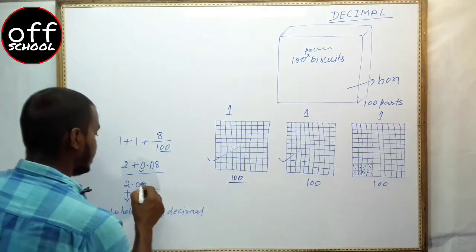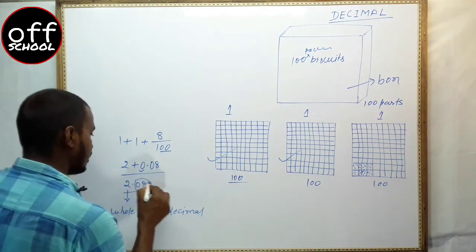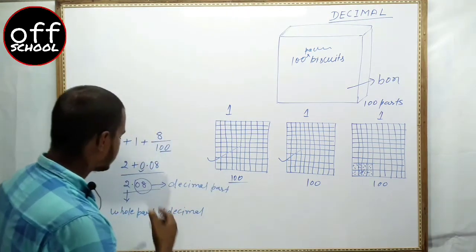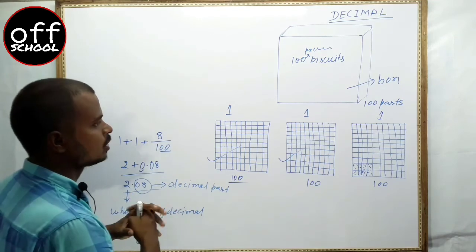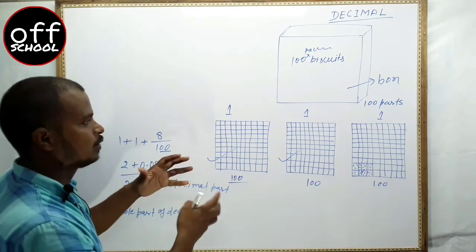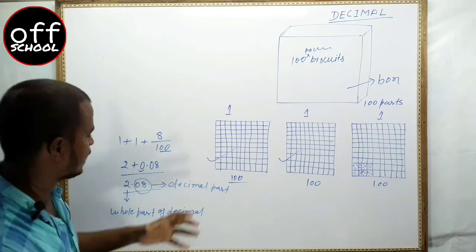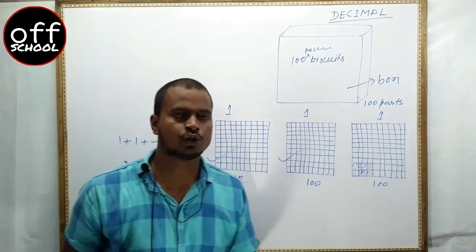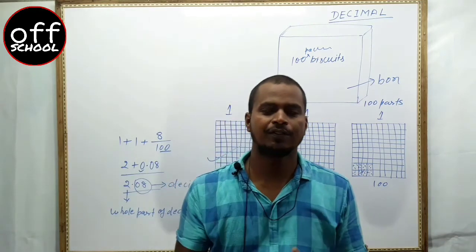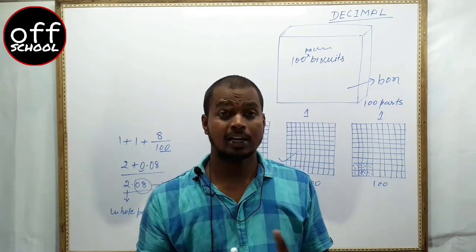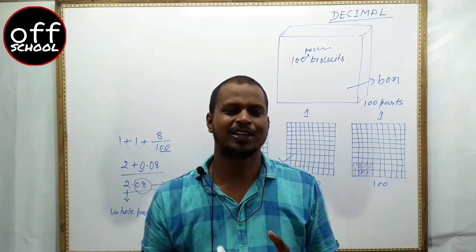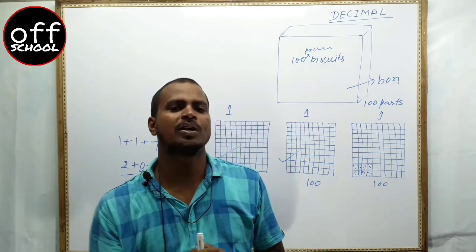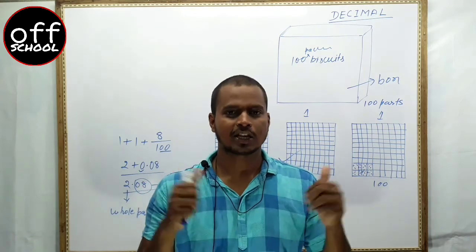This is the way we can see how the whole part and the decimal part are represented together. This was the decimal part related to topics like fraction, like and unlike decimals. Multiplication, addition, subtraction and other properties we will discuss in the next video. Till then, take care. Bye bye.